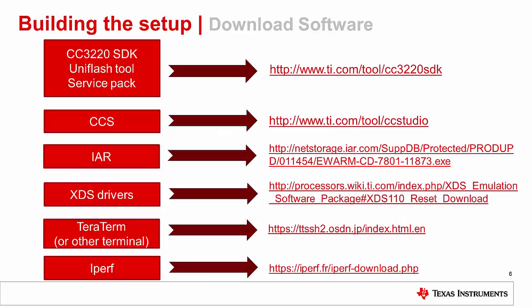The software components mentioned in the previous slide can be obtained from the provided links. This tutorial assumes that these packages are installed at their default location. To make sure that the XDS drivers are installed properly, connect the CC3220 launchpad to the PC using the micro USB cable, open the device manager, and the XDS ports should appear under Ports.